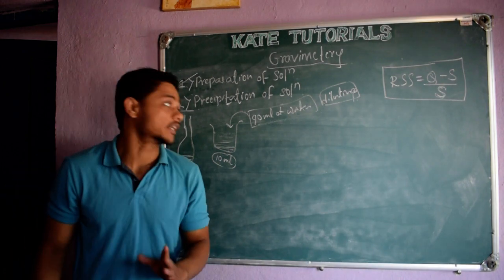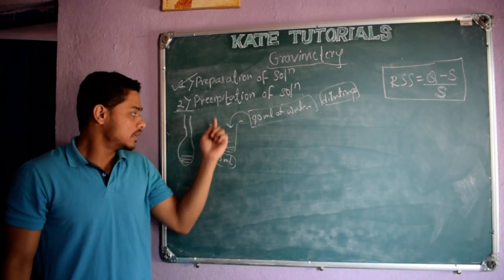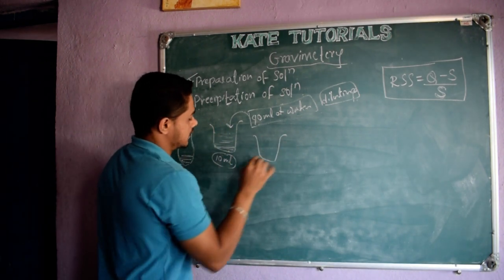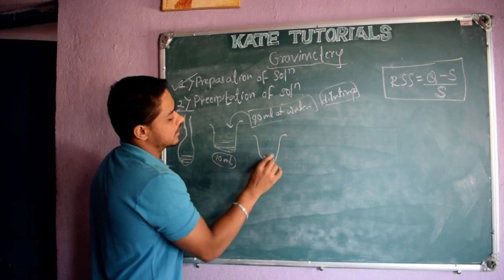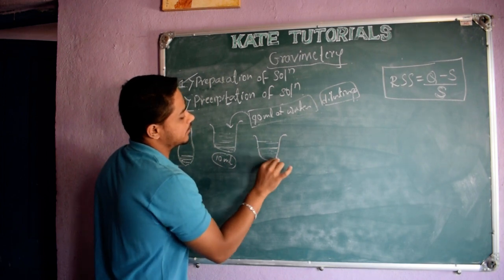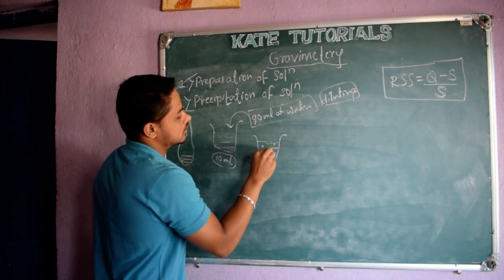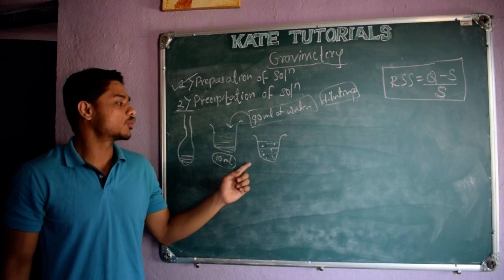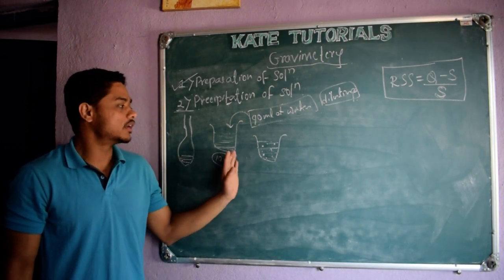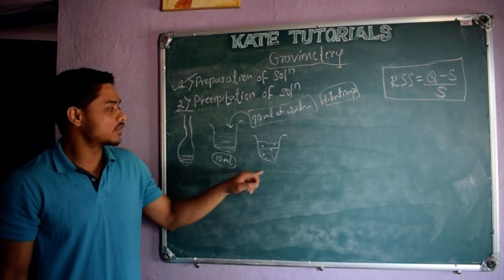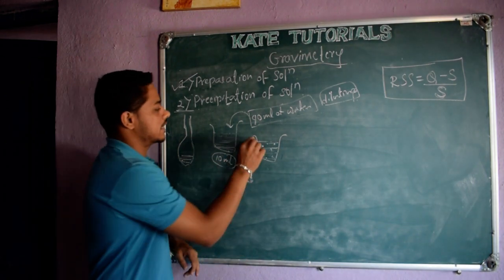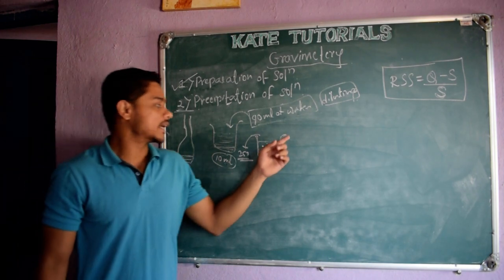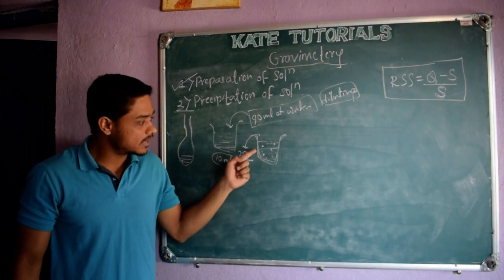Why we are diluting? Initially, in 10 ml, all analyte will be here only. If I dilute, the volume increases to 100 ml. Analyte will be scattered here and there — everywhere, homogeneous solution. Why will we get homogeneous solution? Because it is soluble in water. So, we will get homogeneous solution. The analyte will be distributed throughout the solution in a beaker. We take a beaker of 250 ml so that the analyte is distributed throughout the solution.